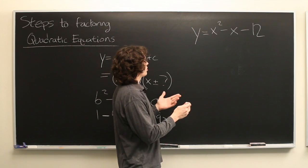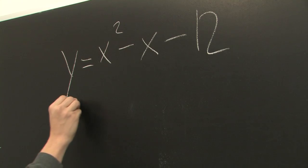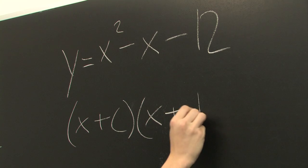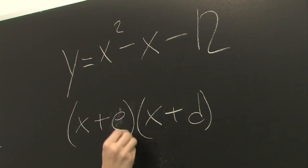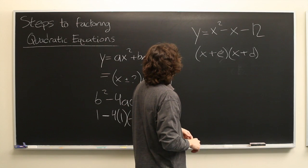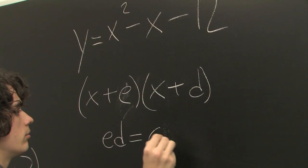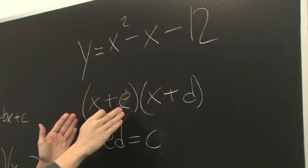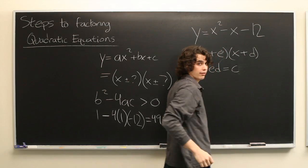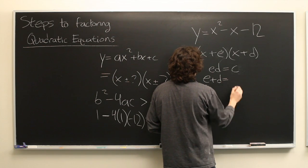What are some tricks to determine more easily what this should look like, besides just guessing and checking? Let's say we're going to write it in the form x plus e times x plus d. What we want is that e times d should equal c — because when you multiply these out, you get x times x equals x squared, and e times d equals negative 12. You'll also want e plus d to equal b.